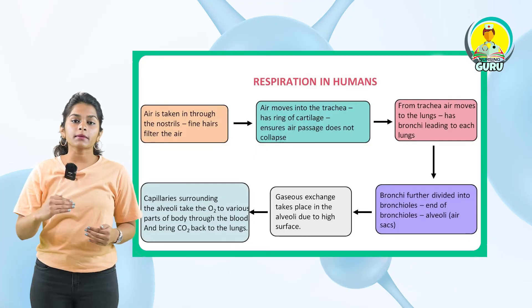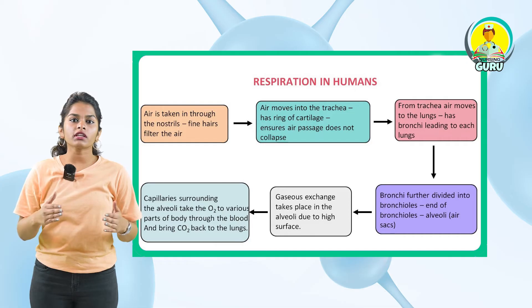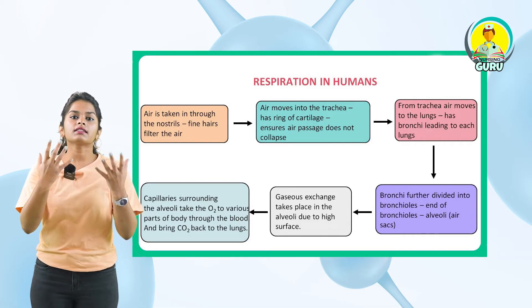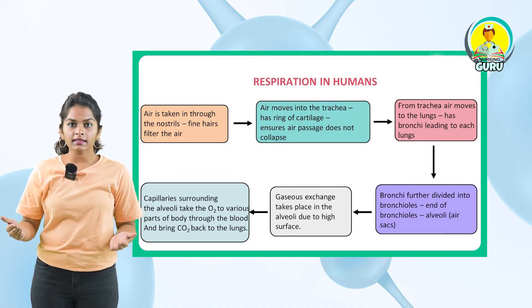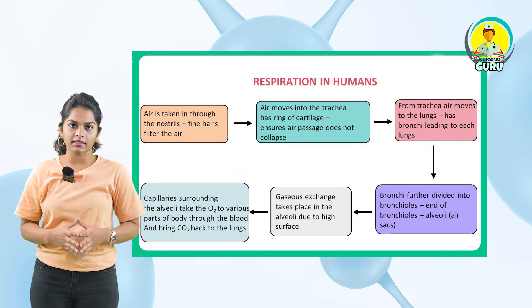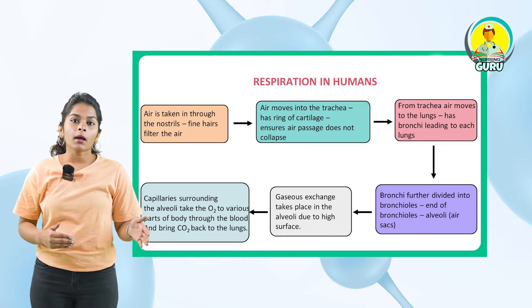Our next topic is the process of respiration — the steps involved and how respiration takes place. Initially the atmospheric air is drawn in and the carbon dioxide rich air is released. The diffusion of gases takes place across the alveolar membrane, which is the actual site of respiration. Then the transportation of gases by the blood is followed by the diffusion of oxygen and carbon dioxide at the tissue site. This oxygen is then ready to be used by the cells of the body.